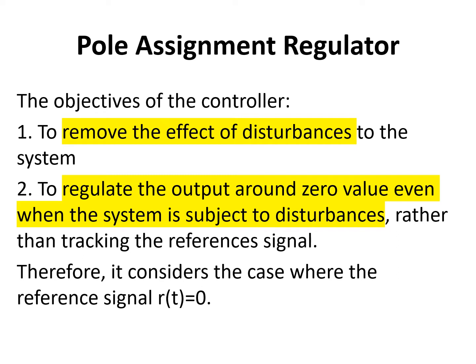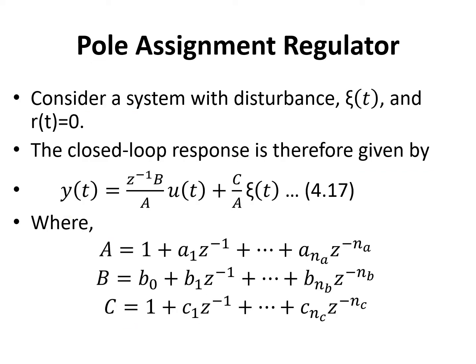Now, pole assignment regulator. The objective of the controller is to remove the effect of the disturbance on the system, to regulate the output around zero value even when the system is subject to disturbance, rather than tracking the reference signals. Therefore, we consider the case where the reference signal r(t) is equal to zero. Consider a system with a disturbance zeta(t) and r(t) equal to zero.